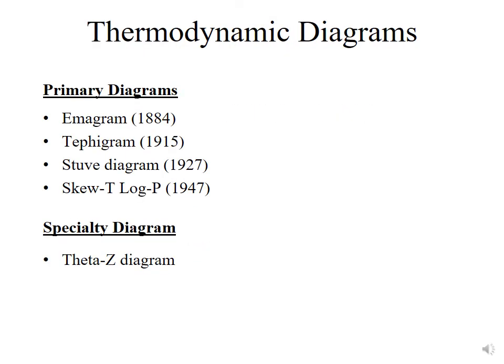The primary diagrams that have been used in atmospheric sciences and meteorology started off with the Emagram back in 1884, the Tephigram in 1915, the Stuve diagram was developed in 1927, and the Skew-T Log-P was developed during World War II and was in its current form by 1947.